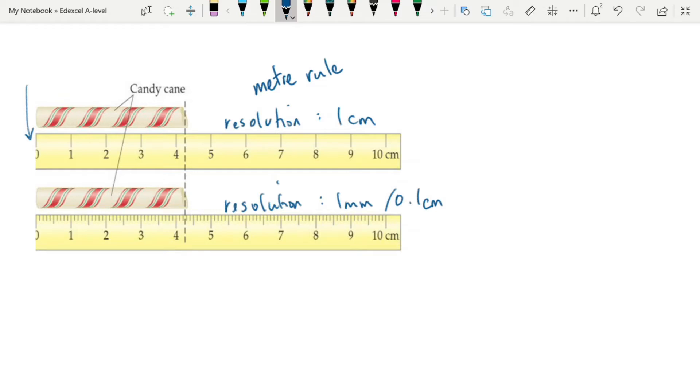If you want to make a measurement of the length of this candy cane and you can see the dotted line shows you the measurement. Your uncertainty for the top one would be best you can do is 4 centimeters. So it's 4 centimeters plus or minus half the resolution or the smallest scale division. So 0.5 centimeters.